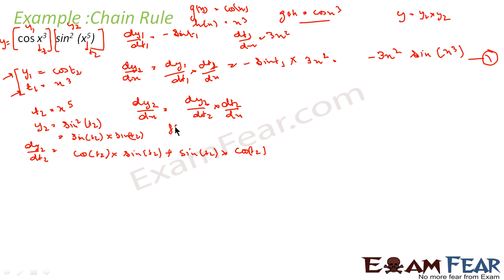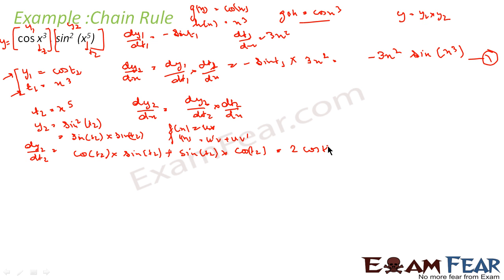So the formula is f(x) = uv, so f'(x) = u'v + uv'. Applying the same formula here, u = sin(t) and v = sin(t), so this becomes 2·cos(t)·sin(t). So my dy2/dt2 = 2·cos(t2)·sin(t2).